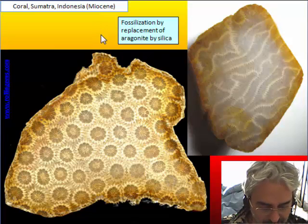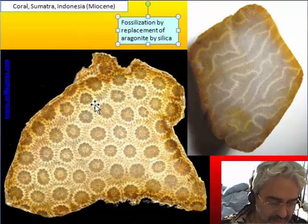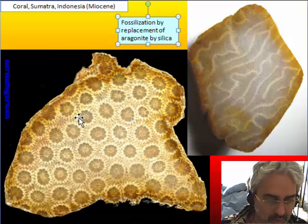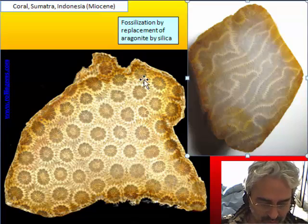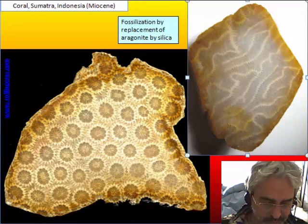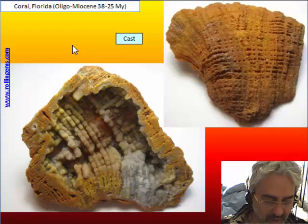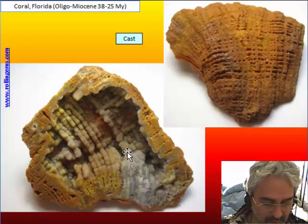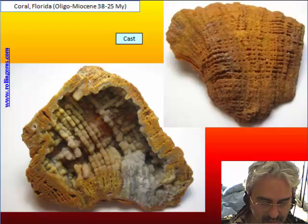This is another replacement by silica of aragonite because coral is aragonite. This is a jasper because it's a silicified rock with the pattern of the coral — the famous coral from Sumatra with two different species. The most famous coral from Florida are really casts, not replacement, and you can see good detail of the outer surface, but inside the carbonate was depleted and just void filled with chalcedonic crystallization.